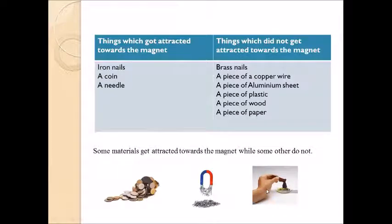Third picture shows some iron filings got attracted but brass nails, a piece of copper wire, a piece of aluminum sheet, a piece of plastic, a piece of wood, a piece of paper did not get attracted towards the magnet. Through this activity, we can understand some materials get attracted towards the magnet while some others do not.